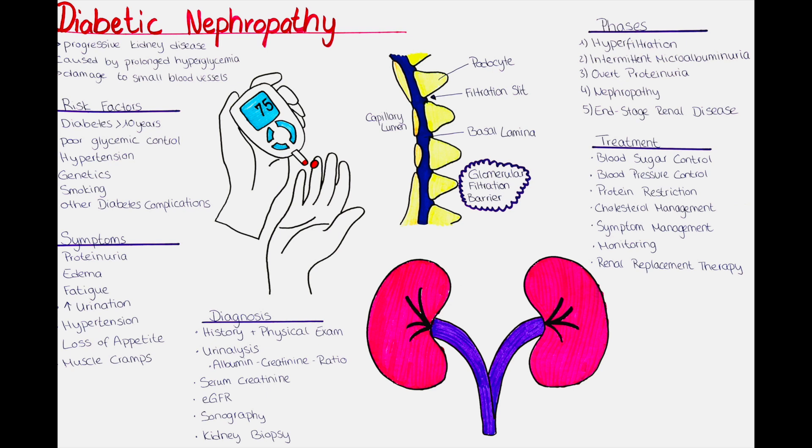One of the earliest signs of diabetic nephropathy is the presence of protein in the urine, called proteinuria. Healthy kidneys filter waste products and excess substances from the blood while retaining essential proteins. When the glomerular filtration barrier is damaged, proteins, especially albumin, can leak into the urine, leading to proteinuria.